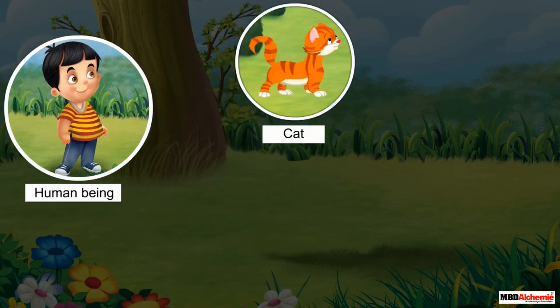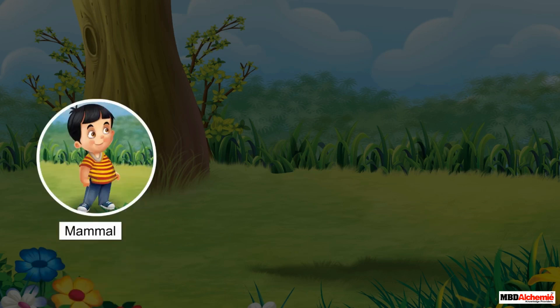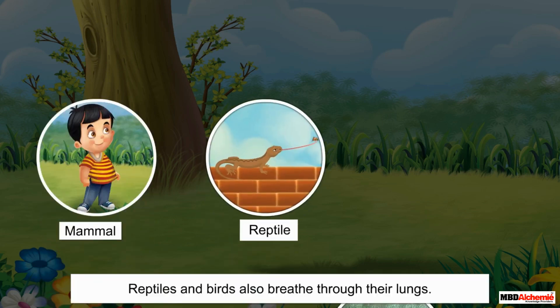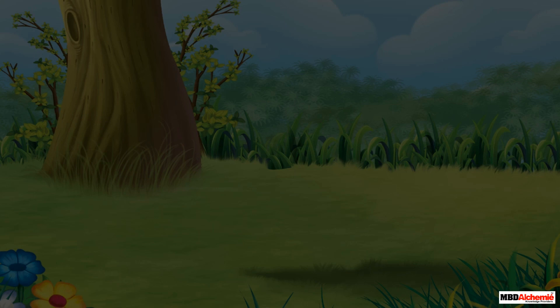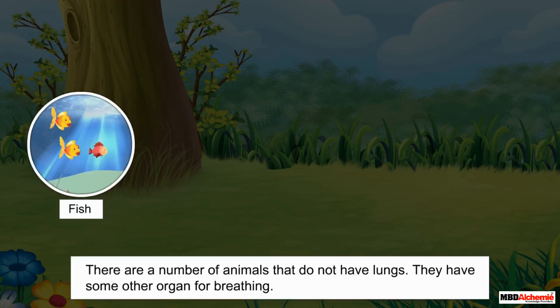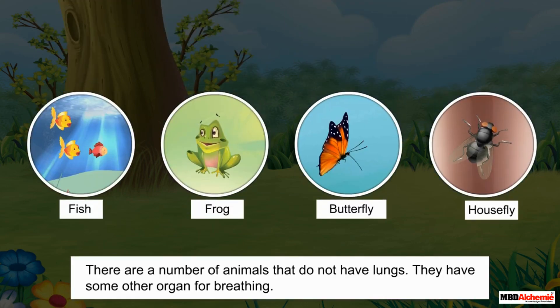Like human beings, all mammals such as cat, cow, and dog breathe with the help of their lungs. Apart from mammals, reptiles and birds also breathe through their lungs. However, there are a number of animals that do not have lungs — they have some other organ for breathing.